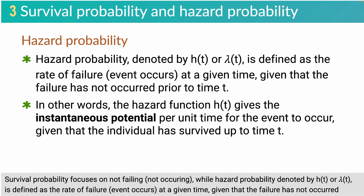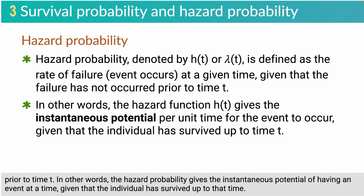Survival probability focuses on not failing or not occurring, while hazard probability — denoted by h(T) or lambda(T) — is defined as the rate of failure or event occurring at a given time, given that the failure has not occurred prior to time T. In other words, the hazard probability gives the instantaneous potential of having an event at a time, given that the individual has survived up to that time.